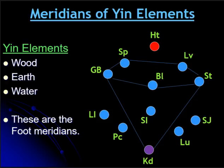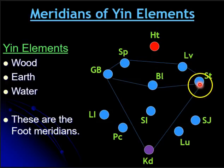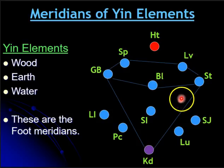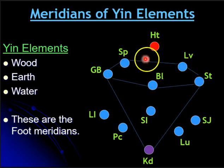First we start with the meridians of the yin elements. The yin elements are wood, earth, and water, and you can see these are the foot meridians. Kidney, spleen, and liver all start in the feet. Then the stomach, bladder, and gallbladder start in the head but go down to the feet and connect with the spleen, liver, and kidney. All of these meridians are from the yin elements of wood, earth, and water, and you can see they form a cone in the spherical meridian flow, with a base that comes to a tip at the kidney.